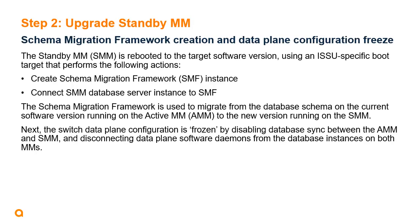Once all pre-upgrade validation checks are complete, ISSU continues by rebooting the standby management module to the target software version. A special ISSU boot target is used that creates an instance of the schema migration framework and connects it to the standby module's local database server instance. The schema migration framework is an AOS-CX software component used to migrate data from the database on the current version running on the active management module to the database on the new software version on the standby module. Next, the switch data plane configuration is frozen by disabling database synchronization between active and standby modules and disconnecting data plane software daemons from both database instances.